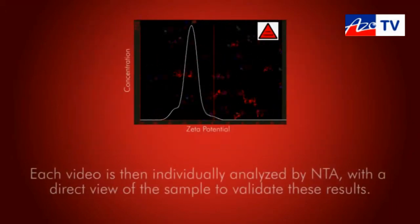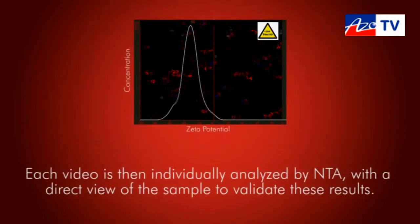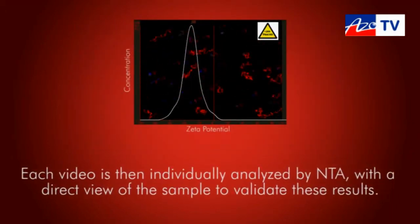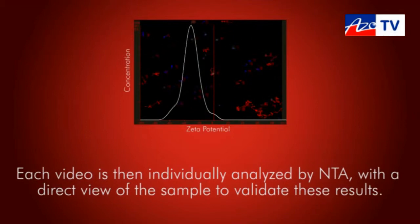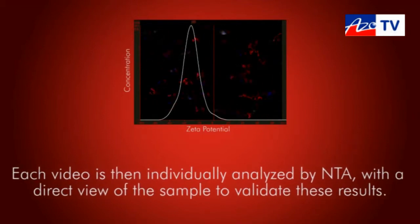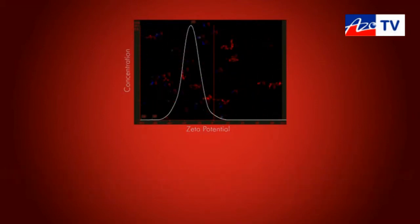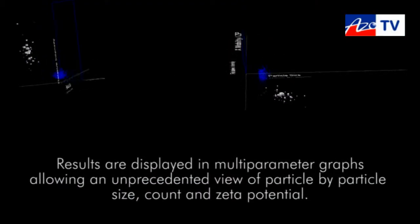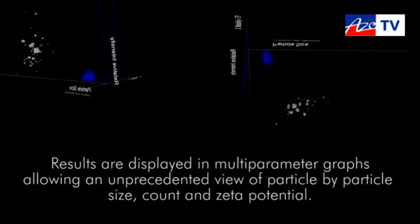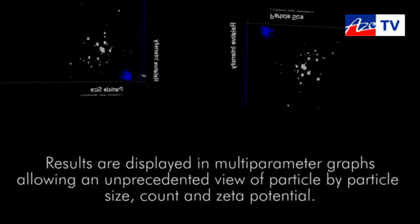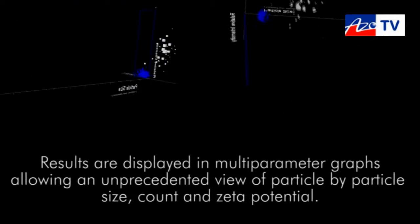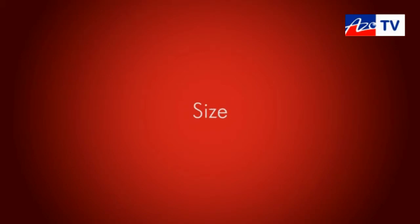Here we have the developing measurement of Zeta potential. Zeta potential is measured here. Here's the isoelectric point. And a distribution particle by particle, which gives us insight into several parameters simultaneously — for nanoparticles anything between 10 and 1000 nanometers.